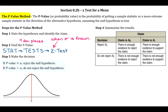Step three is where you make your decision. The decision-making process is a little different here — we compare the p-value with alpha. If your p-value is less than or equal to alpha, you reject the null hypothesis. If your p-value is greater than alpha, you do not reject the null hypothesis.